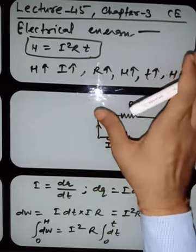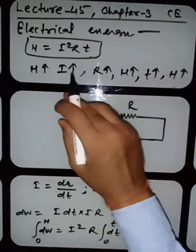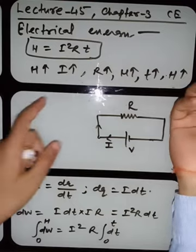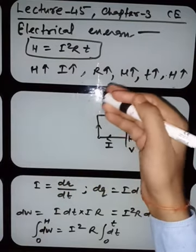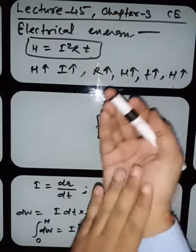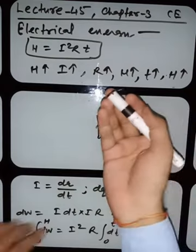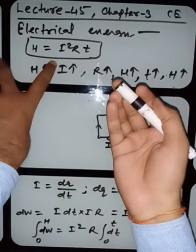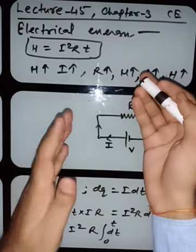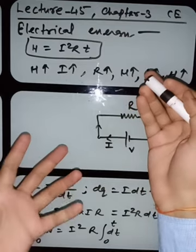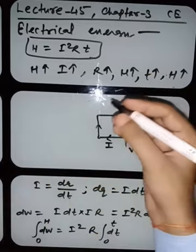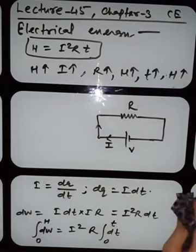Now we shall discuss electrical power. Whenever you are asked which bulb will glow more, you are indirectly being asked to find the heat radiated. The SI unit of heat is of course Joule, because this is energy. Now, electrical power — we know mechanical power also, but we are talking about electrical power.